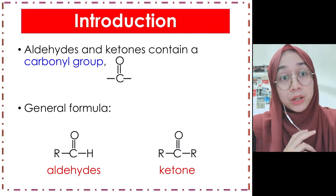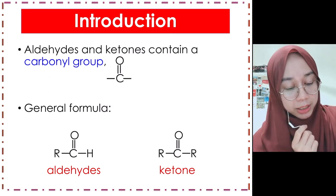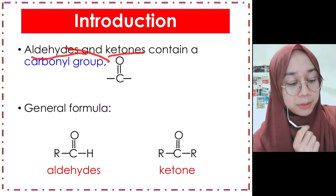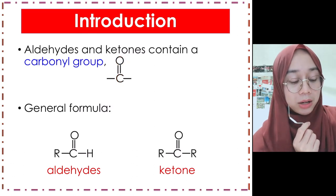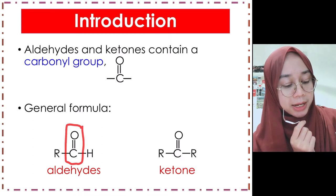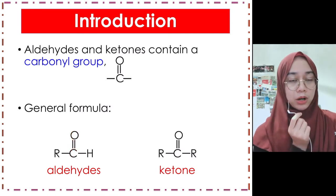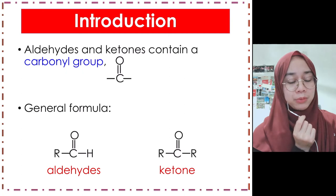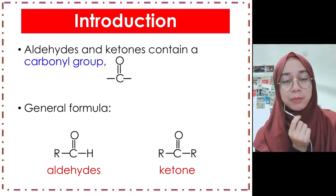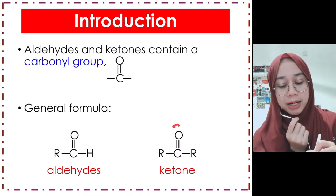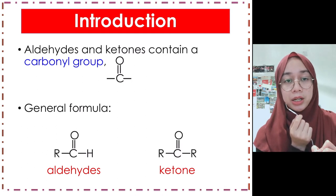Let's look at the structure of aldehyde first. Both aldehyde and ketone have a carbonyl group — C double bond O. For aldehyde, the general rule is that there must be at least one hydrogen attached to the C=O. A memory tip: the word 'aldehyde' contains the letter H, so it must have at least one H. For ketone, we have alkyl groups on both sides of the C=O.